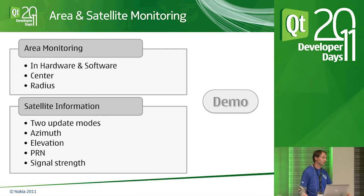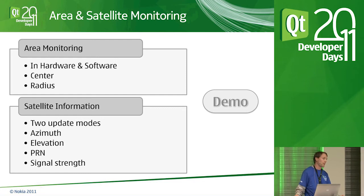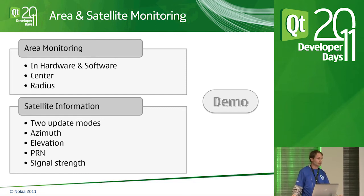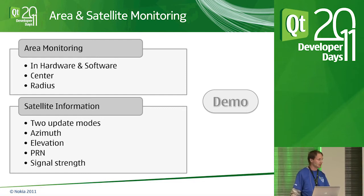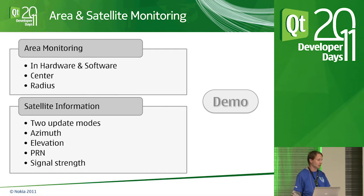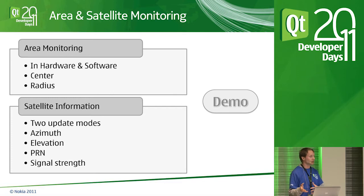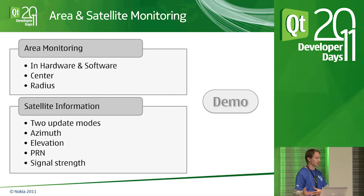Another question: can you support multiple positioning methods — GPS, assisted GPS, IP-based? Yes, that's what most of our APIs do. On a Symbian phone or a Harmattan device, it will use a combination of GPS and A-GPS. It's really up to you as a plugin implementer what you do underneath. The interface allows you to choose one position source, but that source might aggregate multiple methods internally.